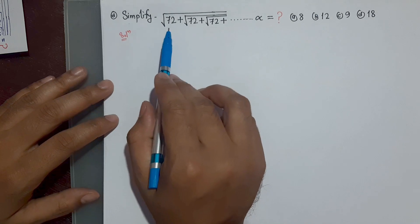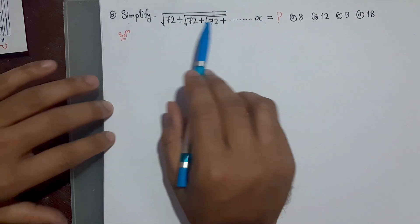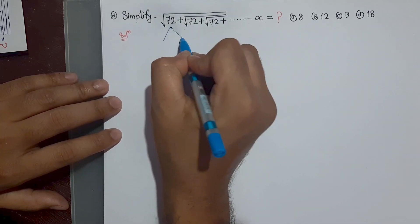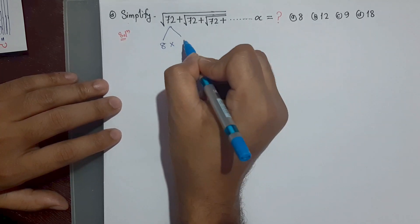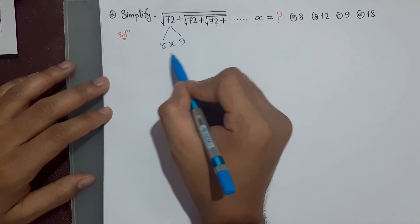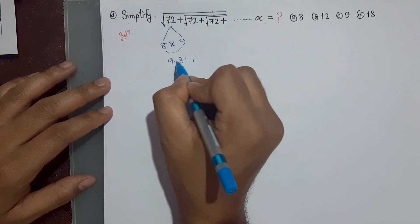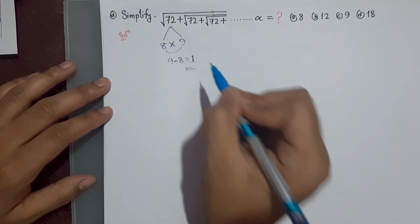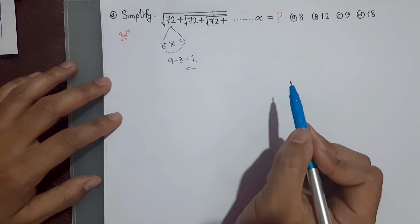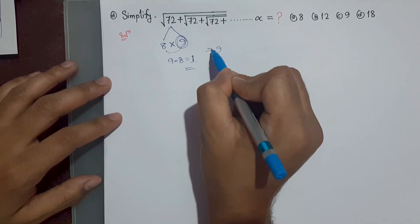Next question: simplify root over (72 + root over (72 + root over (72 + ... ))) to infinity. First, find factors of 72: 8 × 9. We need factors whose difference is 1; 9 minus 8 = 1. Since there is a positive sign, we look at the larger factor, which is 9. So the answer is 9, option C.